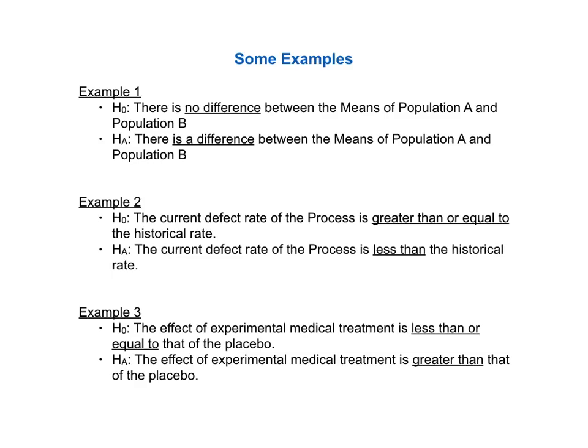Here are three examples. Example 1, the null hypothesis: there is no difference between the mean of population A and that of population B. Alternative hypothesis: there is a difference between the mean of population A and that of population B. Example 2, the null hypothesis: the current defect rate of the process is greater than or equal to the historical rate. And then the alternative hypothesis says, the defect rate of the process is less than the historical rate. In example 3, the null hypothesis says, the experimental medical treatment has a neutral or bad effect. And the alternative hypothesis says, the experimental medical treatment has a good effect.